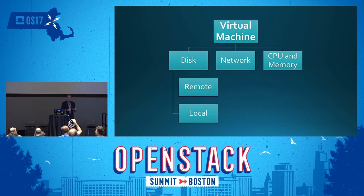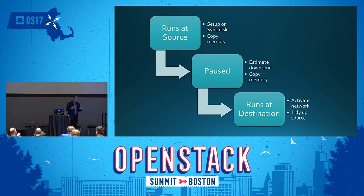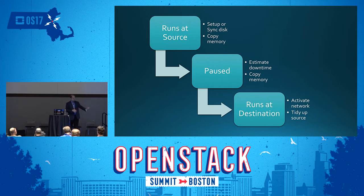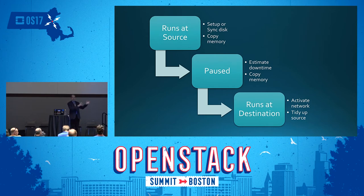Let's look at live migration and its different phases. If you understand a bit more about how live migration works, it'll be way more interesting when I start talking about the results and how to change live migration. Simply speaking, if you look at the virtual machine during live migration, there are three key phases: the VM is running on the source host; there's a point where the VM is paused and not really running anywhere; and then the VM is running on the destination host.